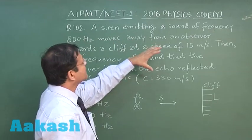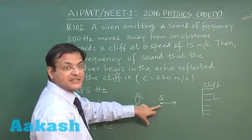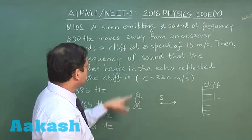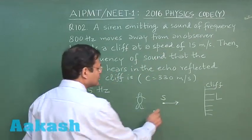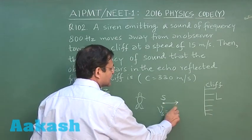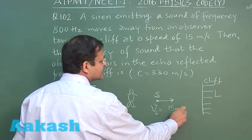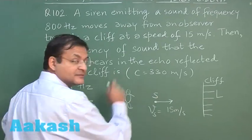So it says that a siren emitting a sound of frequency 800 hertz, this is 800, moves away from an observer, this is observer, towards a cliff at a speed of 15 meter per second. So here velocity of source has been given 15 meter per second, but since it is moving towards the listener, so it will be taken negative, remember.